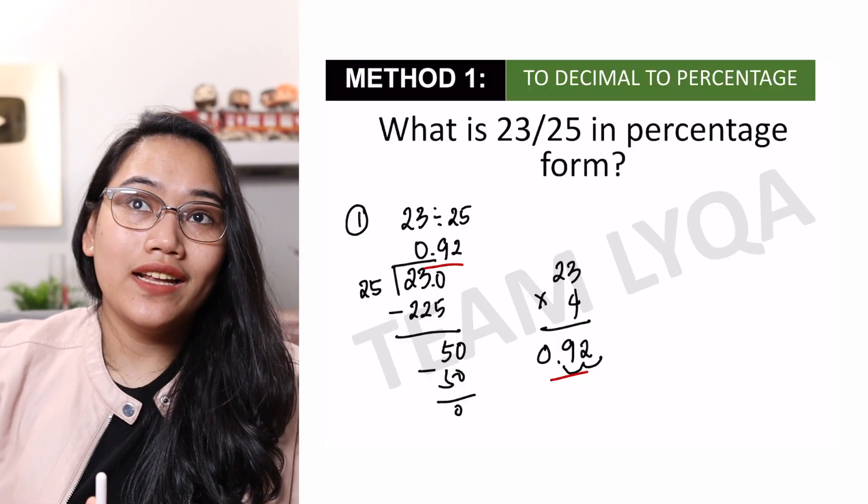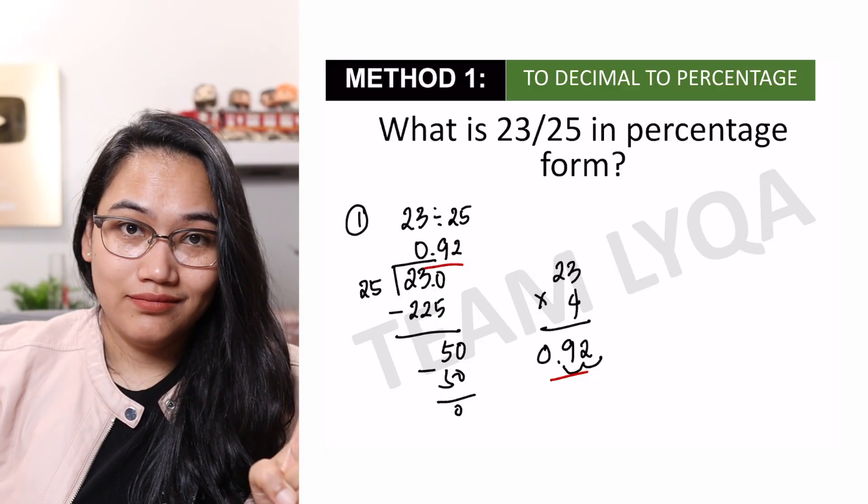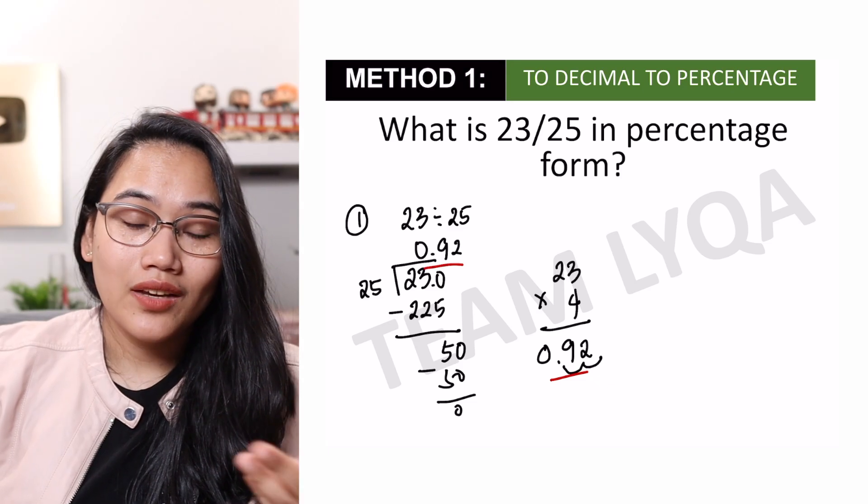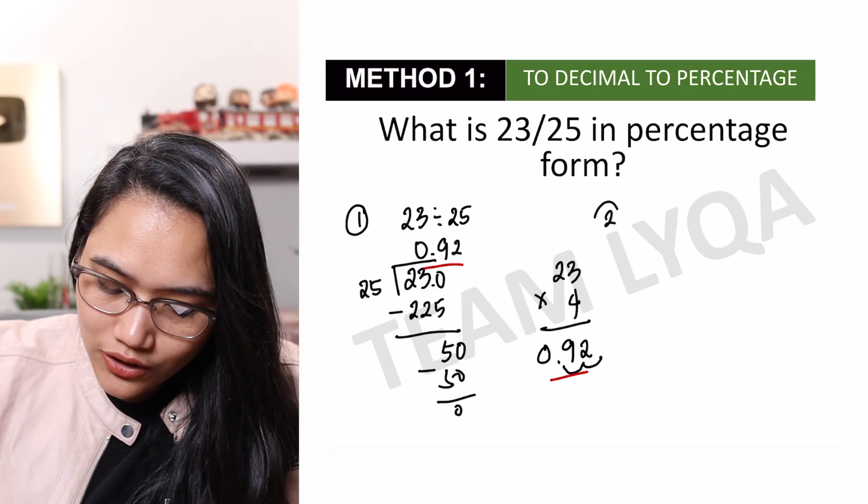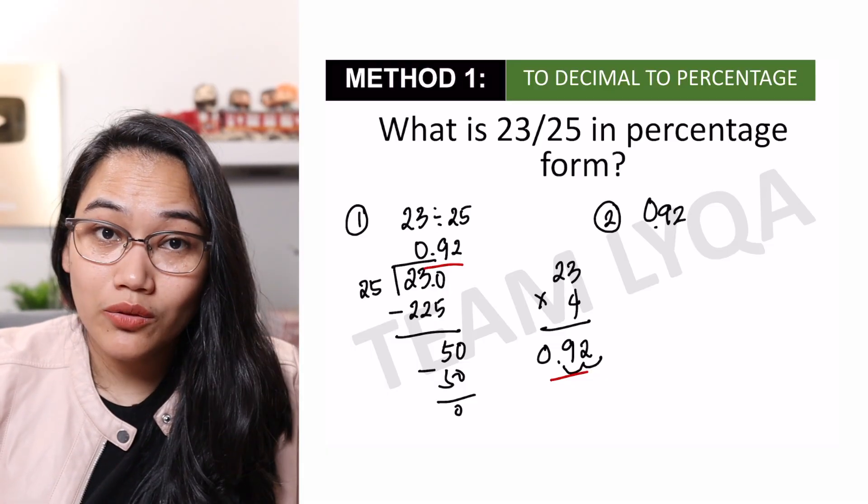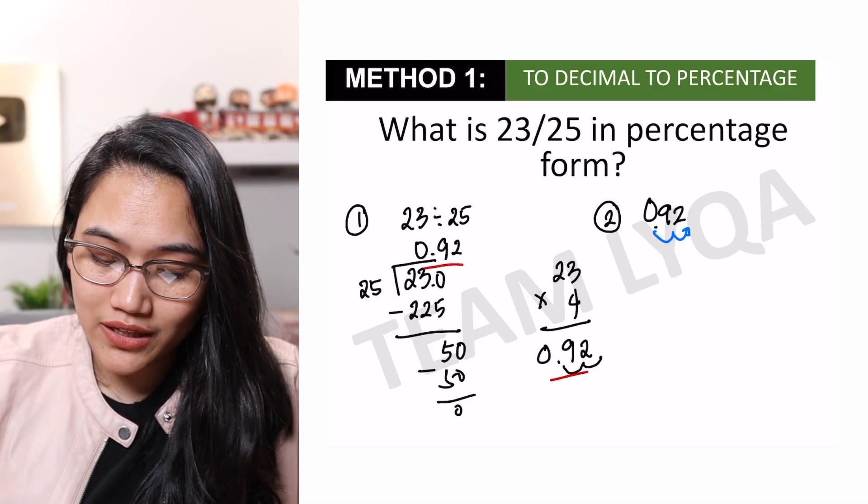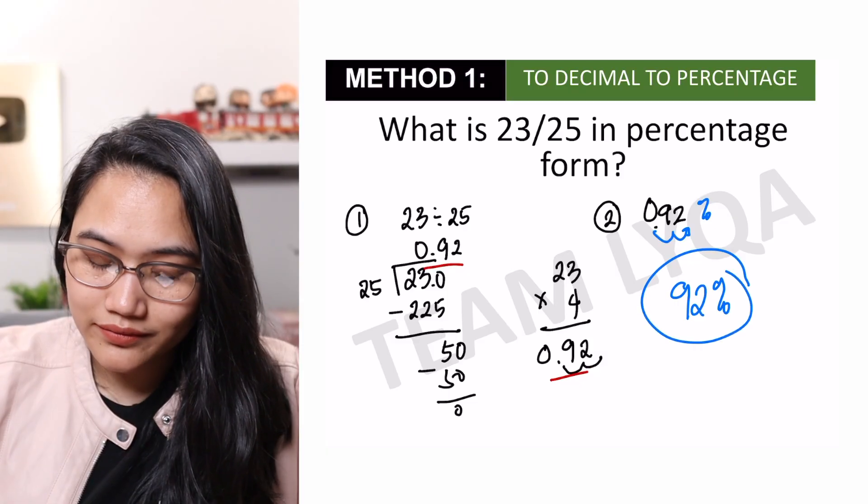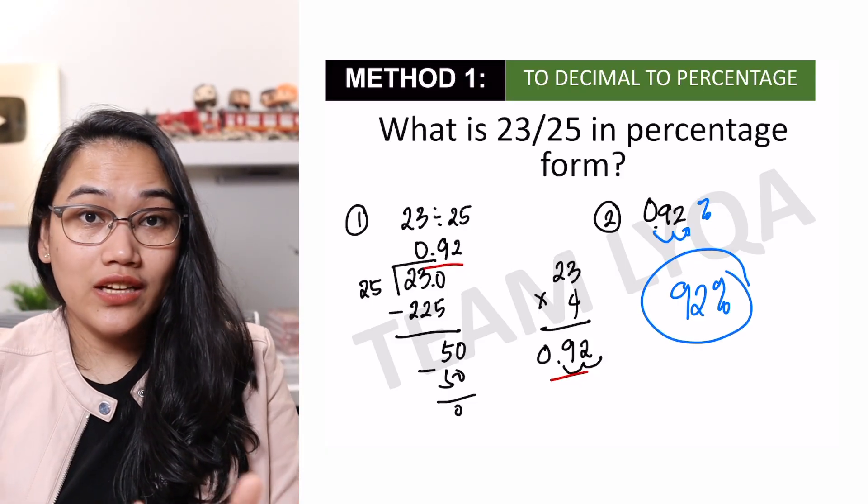The idea there is that 4 na 0.25 ang meron sa isang number, sa 1. So, imultiply ko lang sya sa 4 to know kung ilang 0.25 ang kasya doon. So, yung 0.92 ay gagawin ko lang syang percentage. The way that I do it, the way that we do it is just move the decimal place twice tapos we add the percent sign. So, that is 92%. So, again, convert it to decimal then convert the decimal to percentage.